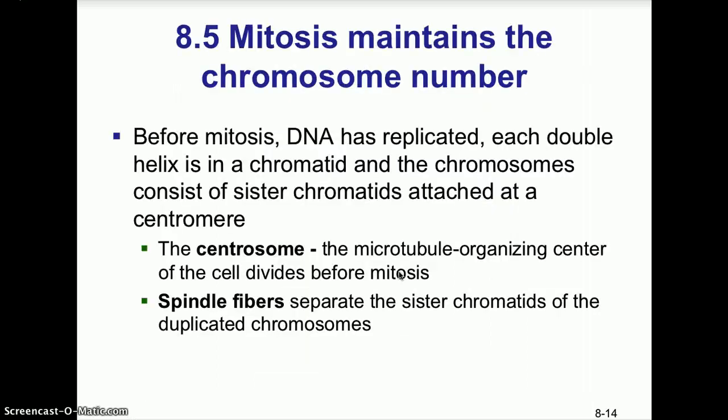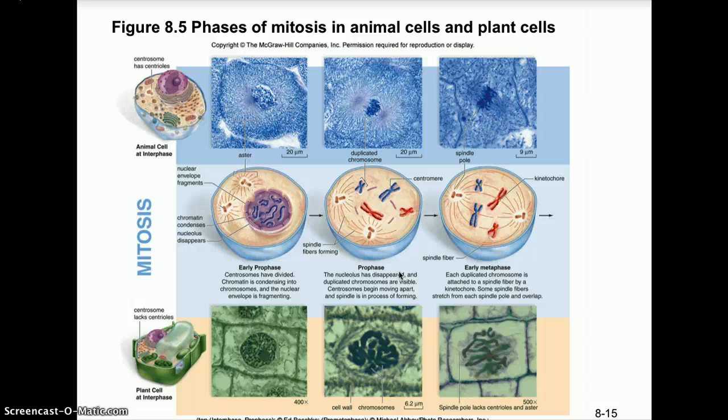Mitosis maintains the chromosome number. Before mitosis, DNA replicates so each double helix becomes a chromatid, and chromosomes consist of sister chromatids attached at the centromere. In animal cells the centrosome divides before mitosis, spindle fibers form, and those spindle fibers separate the sister chromatids of duplicated chromosomes by attaching to the chromosome at a point called the kinetochore.